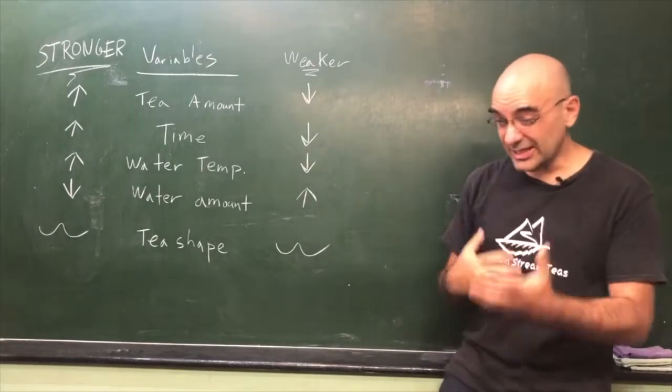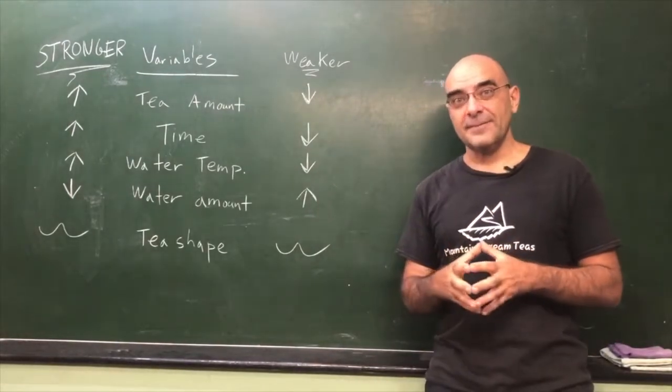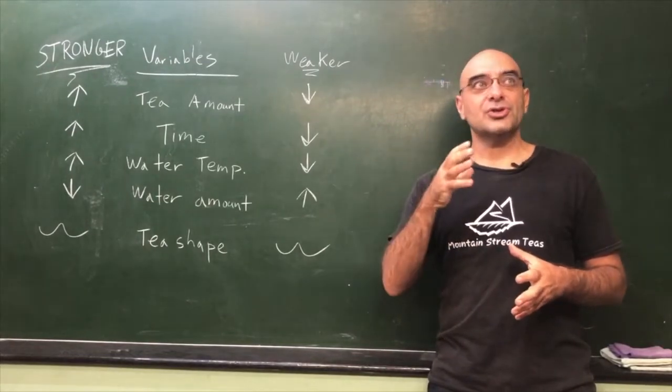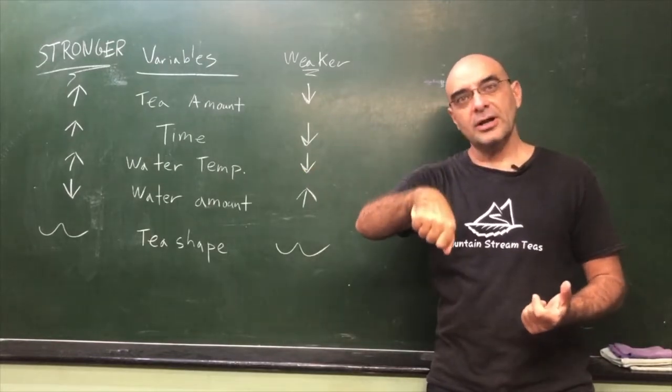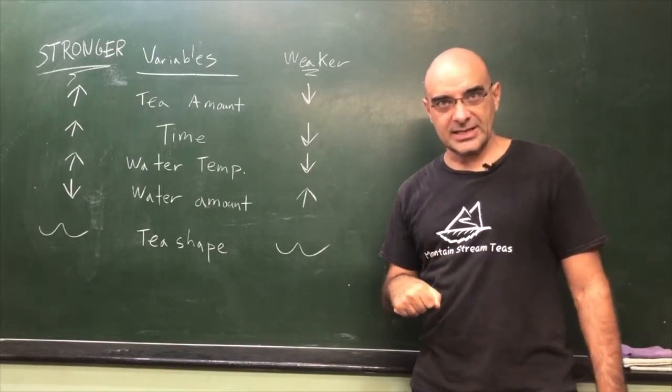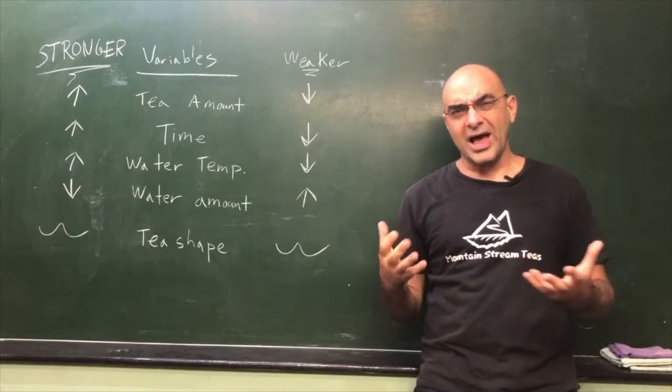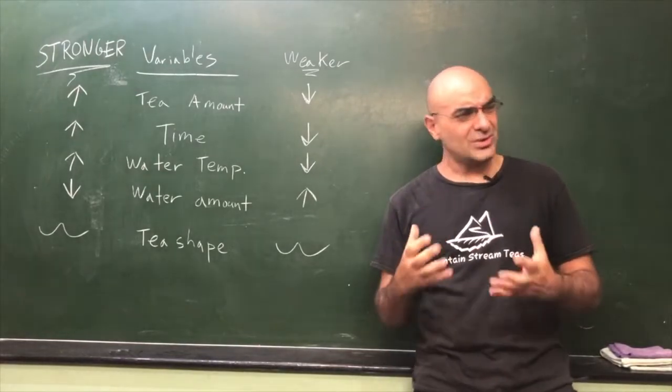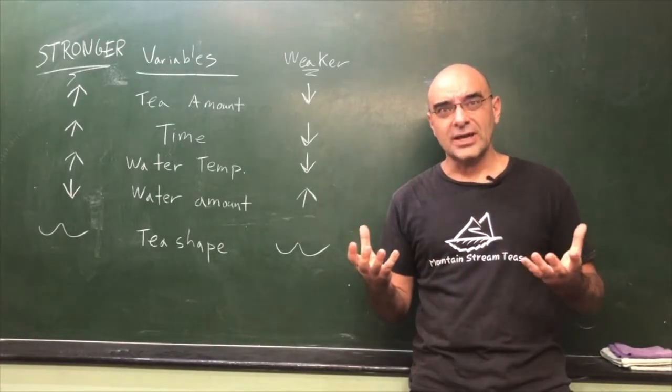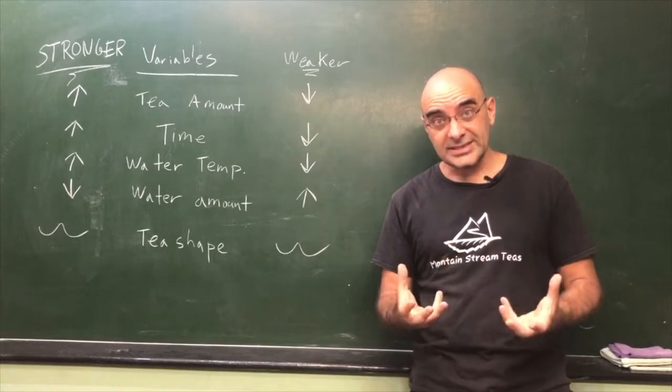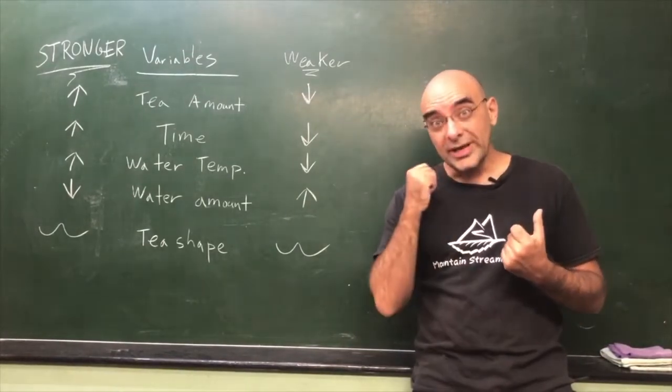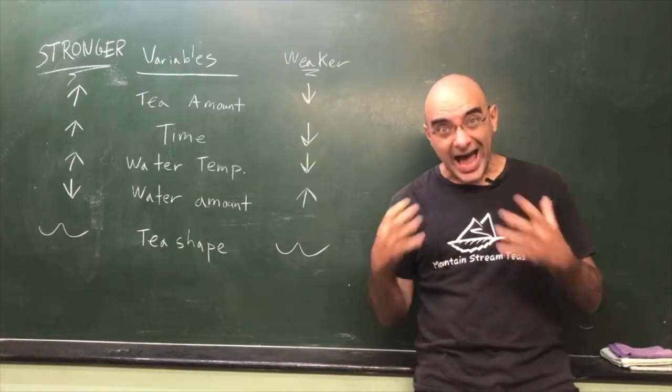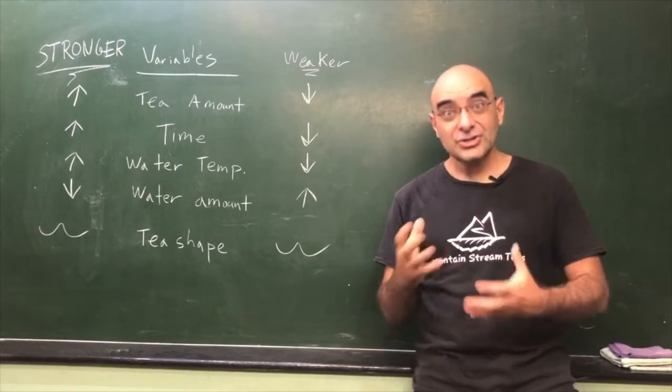So let's just get into it. Let's just do something really easy. Let's say you brew the Western way, and you have a teapot, and you put the tea in the teapot, and you add in the boiling water, and you leave it to steep for 10 minutes, and you drink the tea, and you go, wow, that's way too bitter. I don't like this. What do I do? Is it me, or is it the tea?